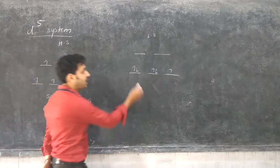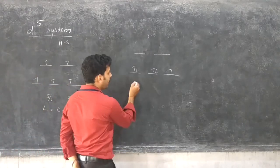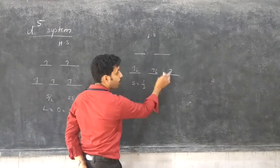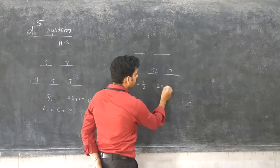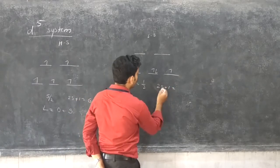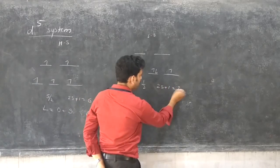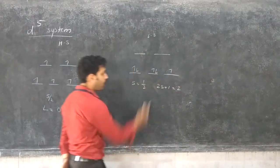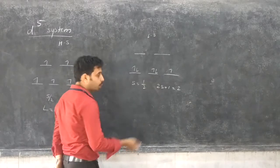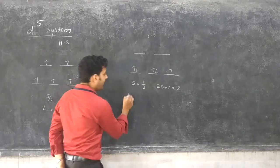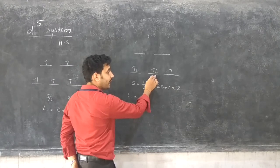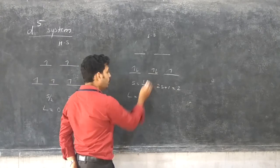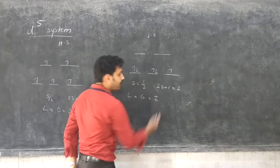Therefore, 2S+1 equals 2. The L value should be: 2, 2, 4, 4+2=6, so L equals 6, which means the I term. S, P, D, F, G, H, I — that is 0, 1, 2, 3, 4, 5, 6 — giving the I term.